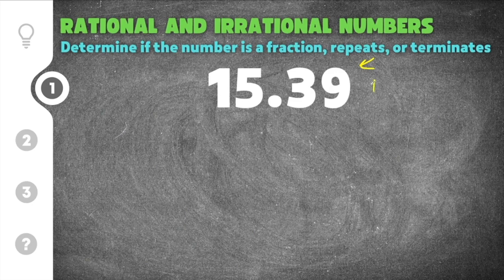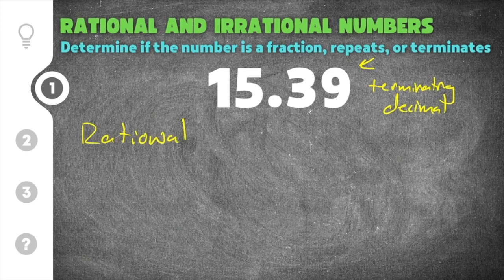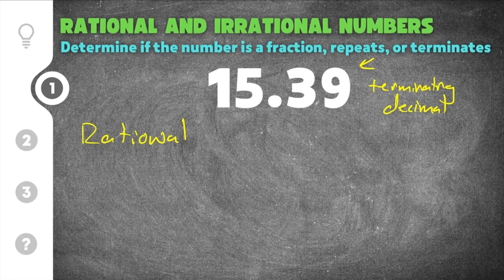this is what's called a terminating decimal and that means that this will be rational because you can write it as a fraction. I can rewrite 15.39 as a fraction by just saying 1539 over 100.